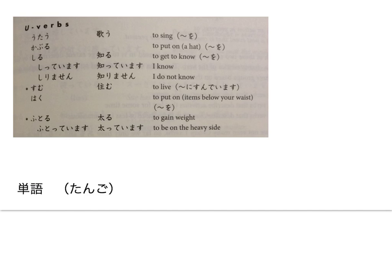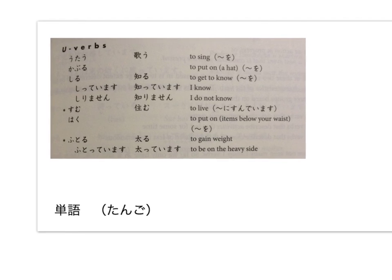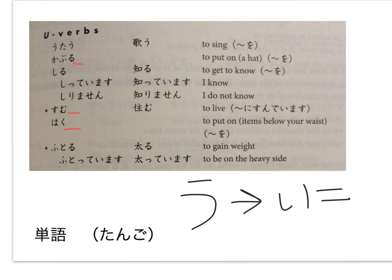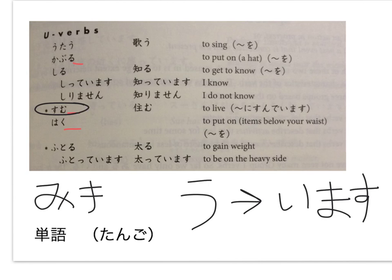Let's get some vocabulary. We have some U-verbs first — U-verbs being verbs that don't always end in U. As you can see, some end with RU, MU, and KU. U-verbs can include verbs that end in RU, but it just signifies that they conjugate into MASU form differently. So if we have that U ending, it changes to E-MASU. So whatever the last sound is, the U in it changes to an E. So SUMU would become SUMIMASU.